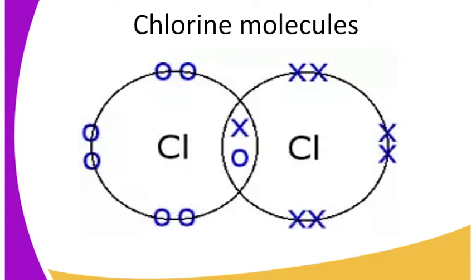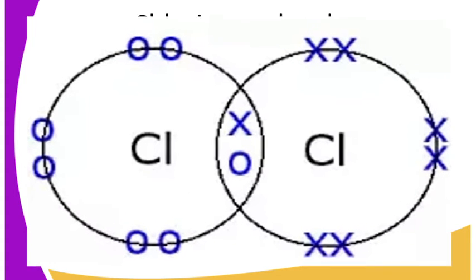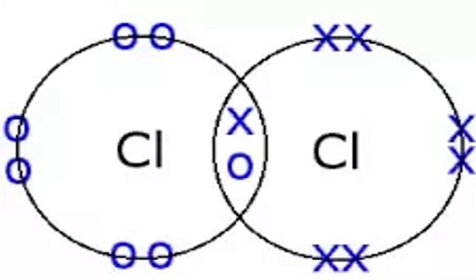Next we have chlorine molecules. As you can see, chlorine exists as a molecule and it has two electrons that are shared. Each chlorine molecule donates one electron to each chlorine atom, so that they can attain the octet rule.